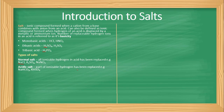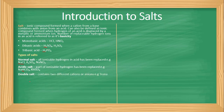There are also acidic salts, where the hydrogen has only been replaced partially — so part of the ionizable hydrogen remains. An example is sodium hydrogen carbonate; as you can see, there is still some hydrogen in the salt, meaning not all hydrogen has been replaced.